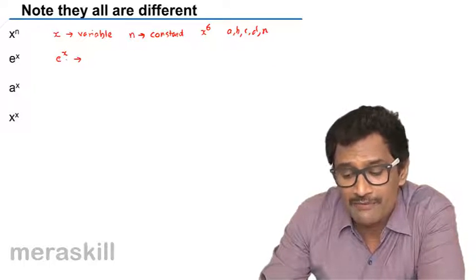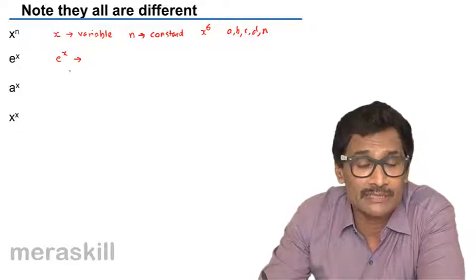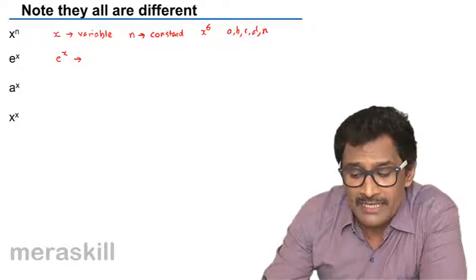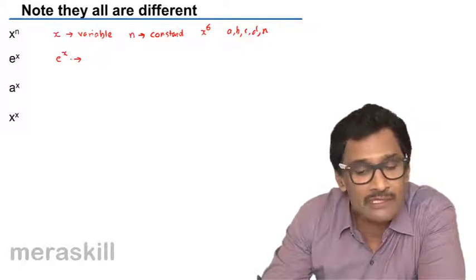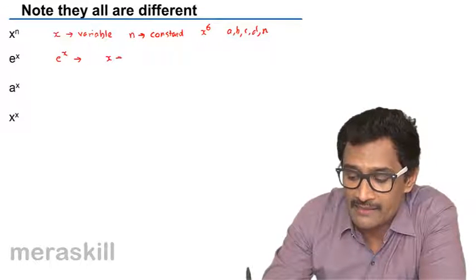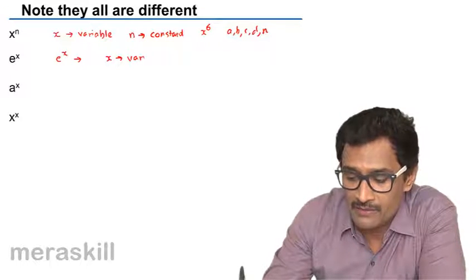So here e, which is of course very much used in the concepts of logarithm - e raised to x - here of course the power is the variable. So e is a special number, x is the power, which is the variable.